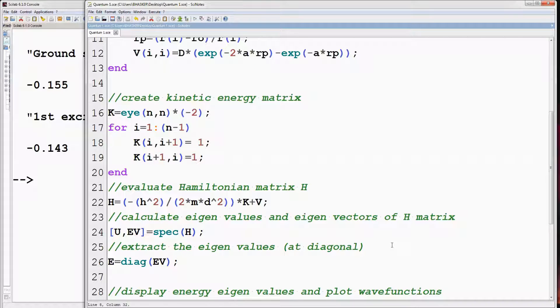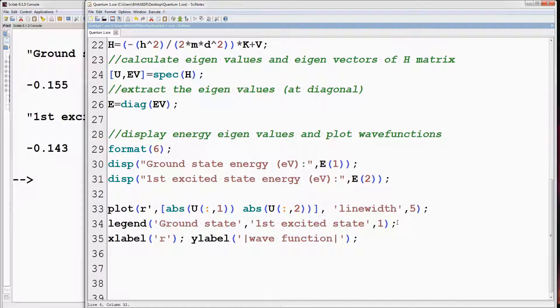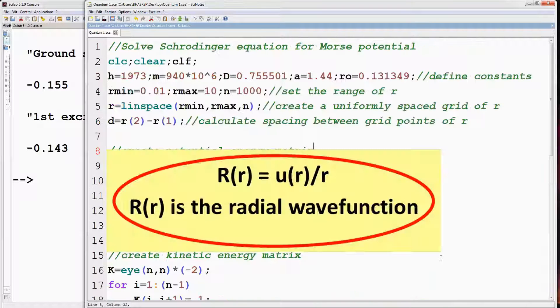Finally, one last point: U here is not the radial wave function. If we divide it by R, then we get the radial wave function.